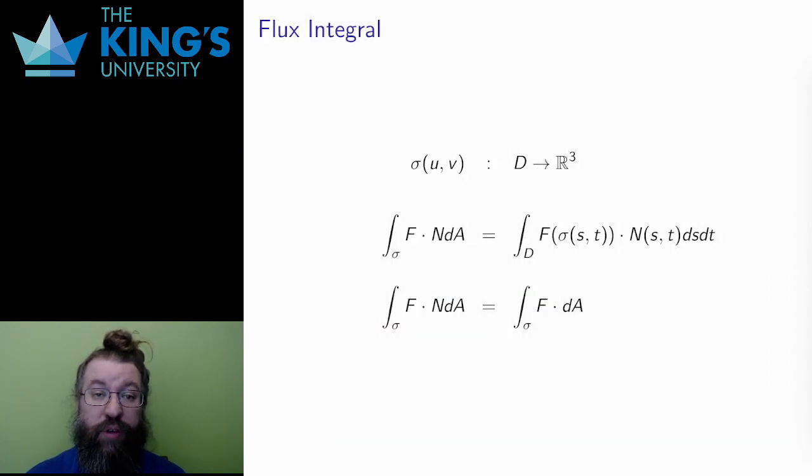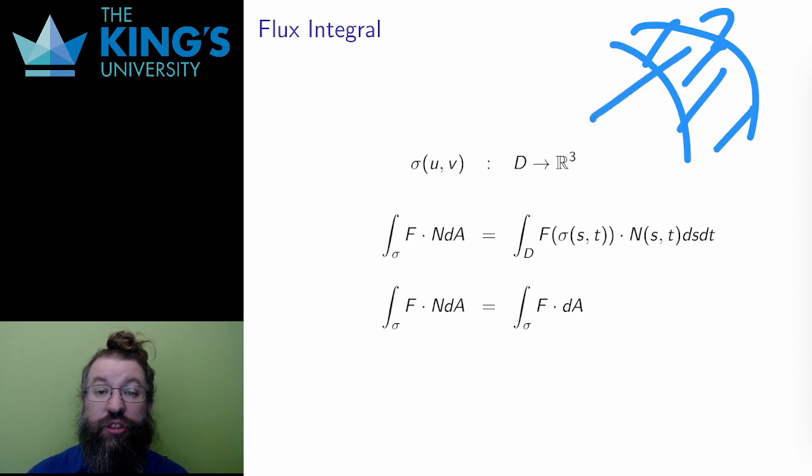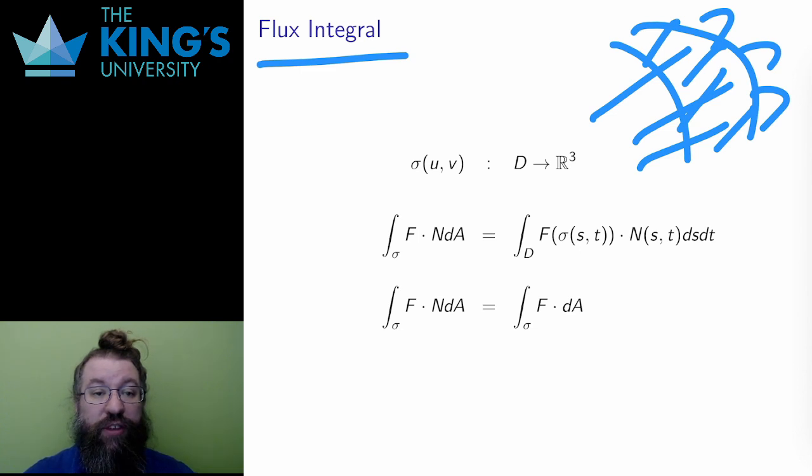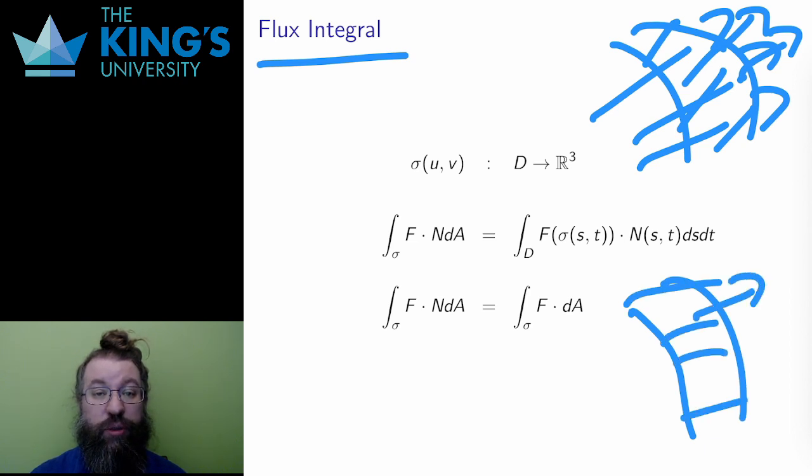So here's the definition. The interaction between a field and a parametric surface is called a flux integral. It measures how much, on average, the field passes through the surface. Positive if the normal of the surface and the field direction are aligned, and negative if these are in the opposite direction.